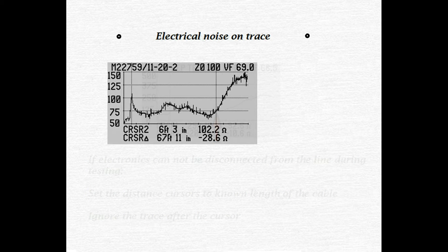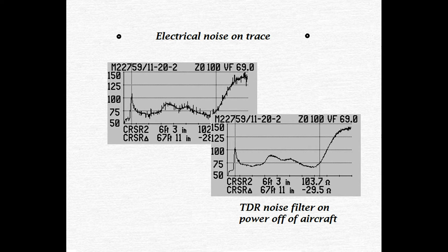Finally, if you have a trace that looks like this with a lot of spikes, this is caused by electrical noise on the wire you're testing. You have two options to fix this. Hopefully your TDR has a noise filter you can turn on. If not, simply turn power off the aircraft while you're testing the wire. Your trace will be much easier to read without all that electrical noise.